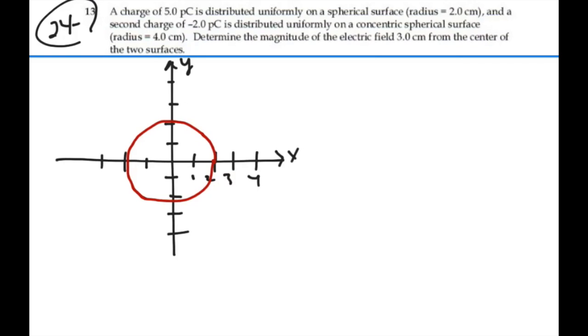And it says that the charge is distributed on the surface. So essentially, this sphere is acting like a conducting shell because the charge is on the surface of the sphere. That charge is called q1 equals 5 picocoulombs.